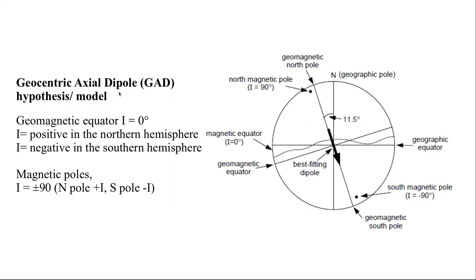The geocentric axial dipole (GAD) hypothesis states that at the geomagnetic equator, inclination is zero. There are three kinds of poles: the geomagnetic equator, geomagnetic north pole, and geomagnetic south pole. According to this model, inclinations are positive in the northern hemisphere and negative in the southern hemisphere. At the north pole, inclination equals plus 90, and at the south pole, inclination equals minus 90.